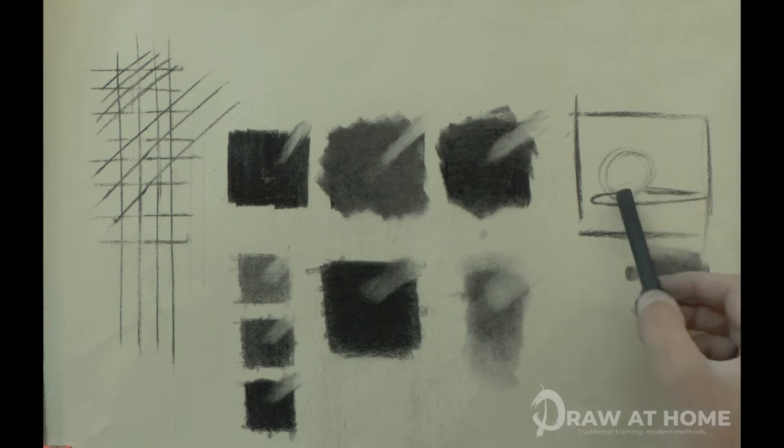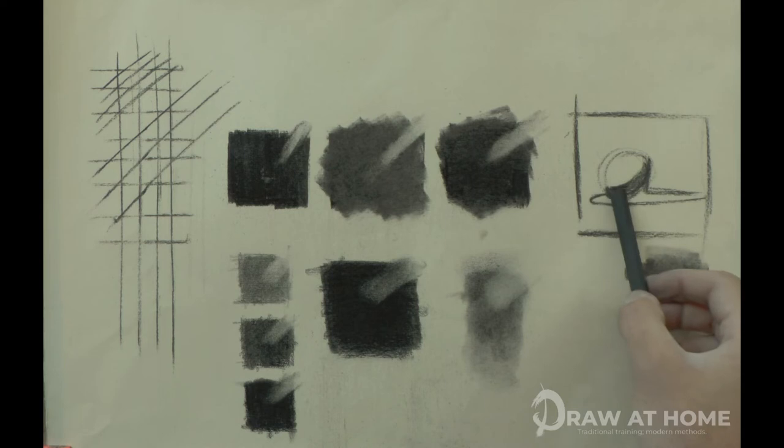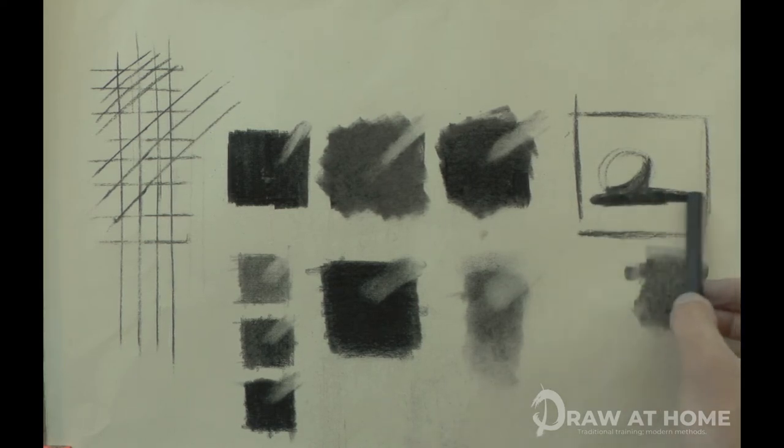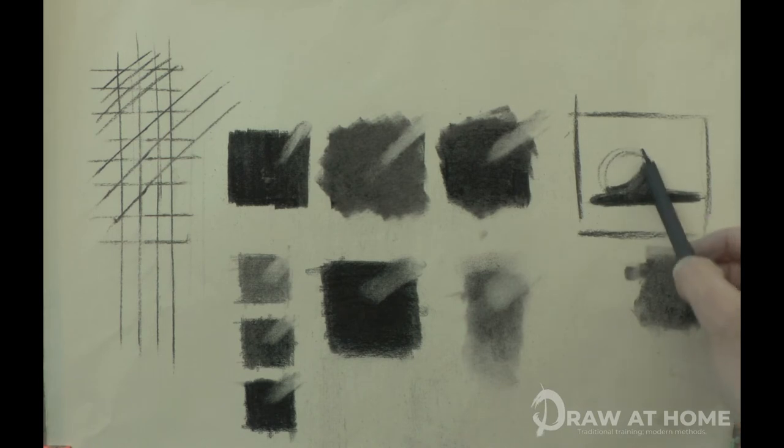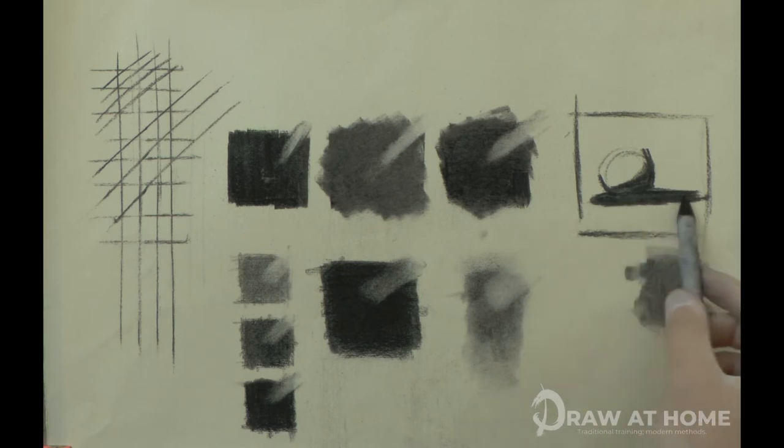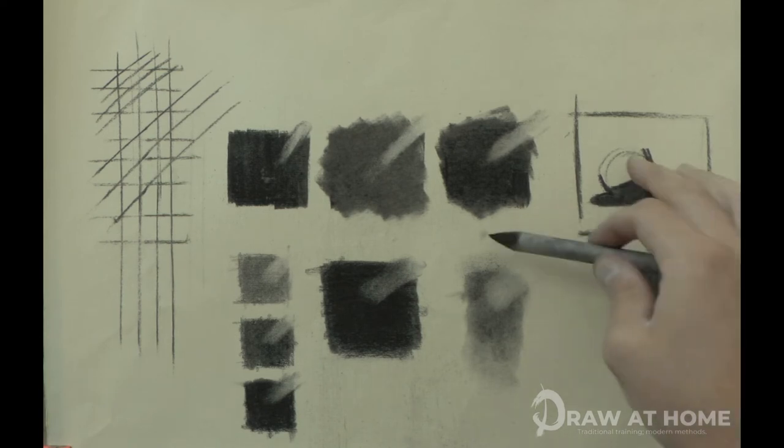After this, massing in using the willow charcoal and the stump to force the charcoal into the tooth of the paper. The stump can also be used as a drawing tool, as it leaves light marks and so doesn't stain the paper when rubbed out.